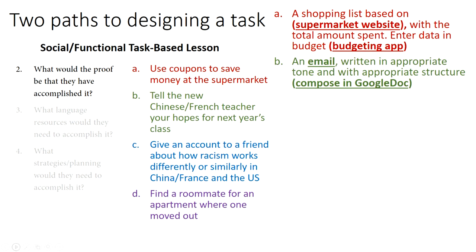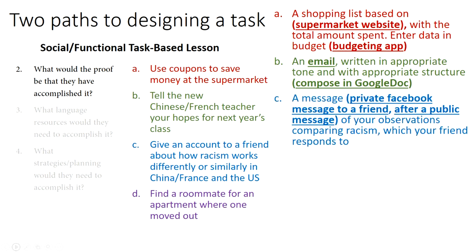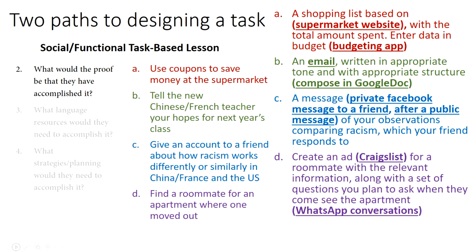Tell the new Chinese teacher their hopes for next year's class — maybe they'll prove it via an email sent to the real Chinese teacher for the next level. Give an account about how racism works — maybe they compose a private or public Facebook message comparing racism in the two countries, or create an ad on Craigslist, or mock up a WhatsApp conversation. These are the kinds of proof that confirm they accomplished the task — this is the moment of completion, the point of the task, shown in the rightmost column.